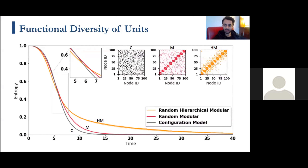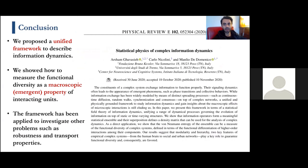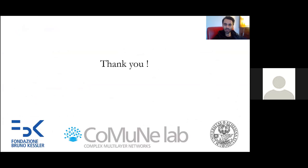Nodes remain functionally diverse if the topology is hierarchical modular, while in random networks and purely modular networks, functional diversity decays quickly. This is probably why hierarchical modular networks are prevalent in nature — in neuroscience, sociology, and elsewhere. In conclusion, we propose a unified framework to describe information dynamics and have derived emergent properties such as functional diversity. There have also been investigations of robustness and transport properties, and we look forward to more follow-ups.